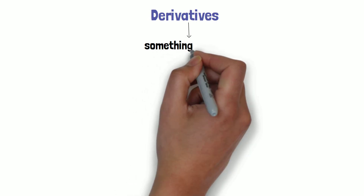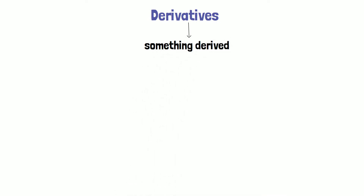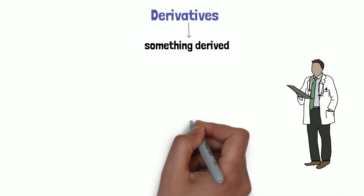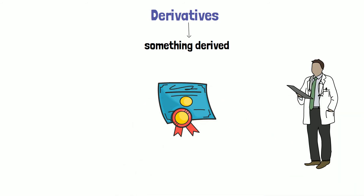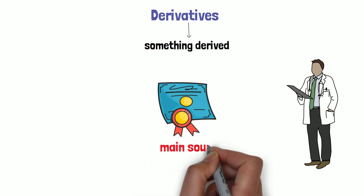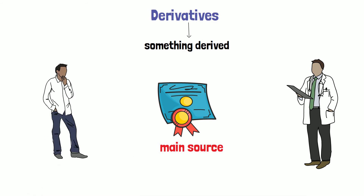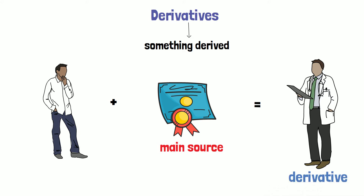Derivative basically means something derived — it is something which derives its value from a base source. Let's take the example of doctors: a doctor gets recognized as a medical professional for the degree they hold. So in a way, this medical degree is an underlying asset, and the person holding the degree is a derivative — their value gets recognized when they earn that degree.